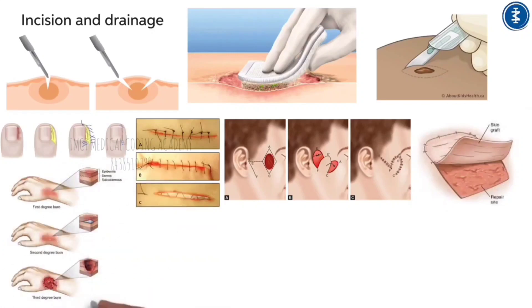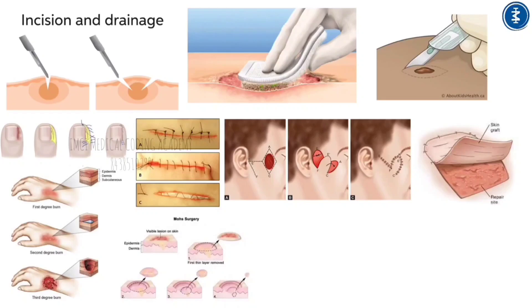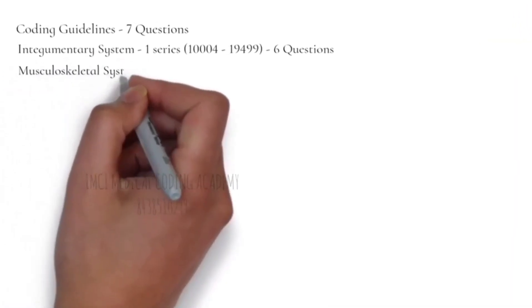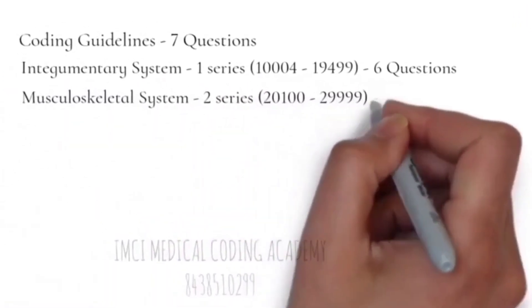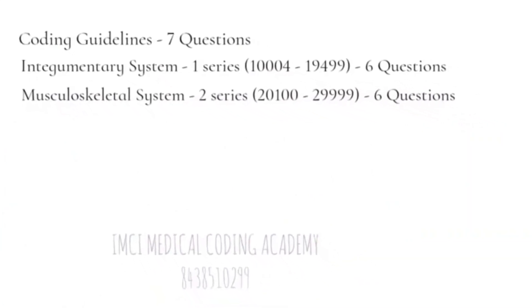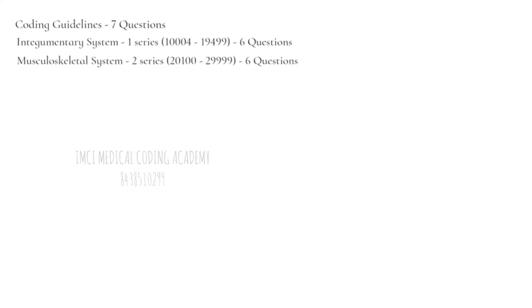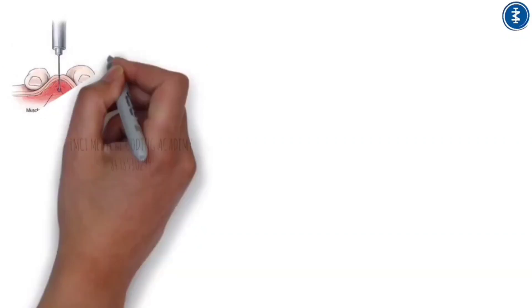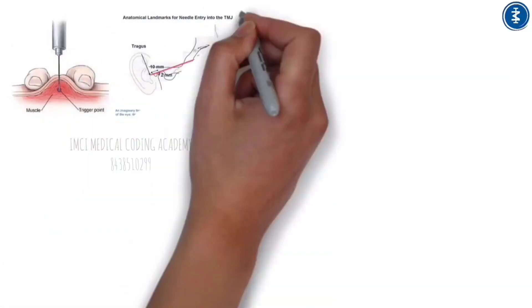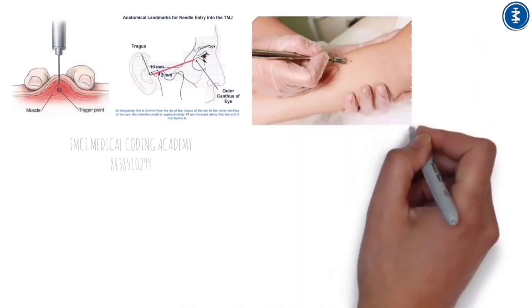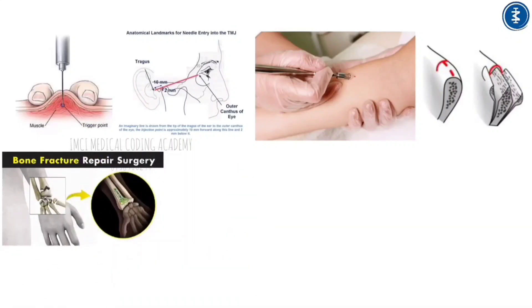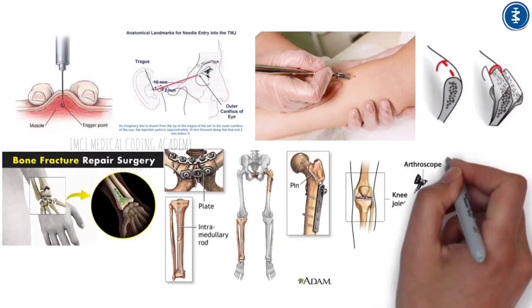The Integumentary chapter also includes burn excision, Mohs microscopic surgery, and skin lesion destruction. The Musculoskeletal System (Chapter 2, codes 20100–29999) contributes 6 questions covering bone, muscle, and joint surgeries including trigger point injection, arthrocentesis, bone incision and excision, bone fracture and repair, bone graft, and arthroscopy procedures.